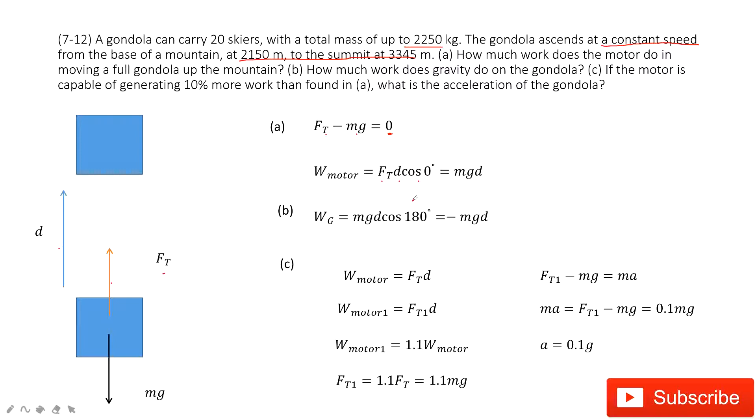The next one asks you the work done by the gravity. So work done by gravity is mg times d and the angle between them is 180 degrees. Because they are in opposite directions, 180 degrees. So cosine 180 degrees is negative 1.